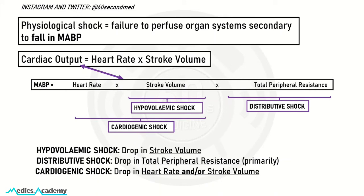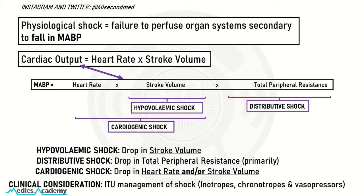A clinical consideration in the ITU management of shock: when looking beyond fluids for a patient who may not be becoming hemodynamically stable, clinicians may consider inotropes and chronotropes in cardiogenic shock, and vasopressors in distributive shock.